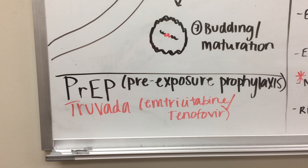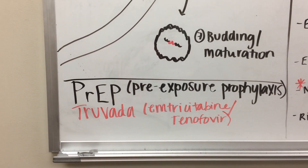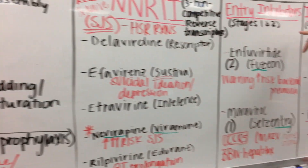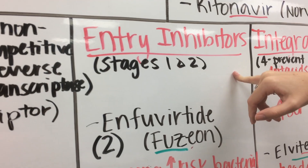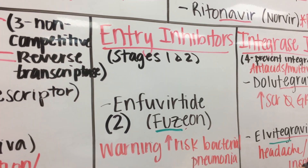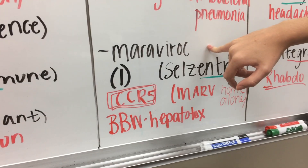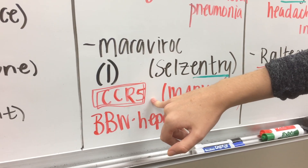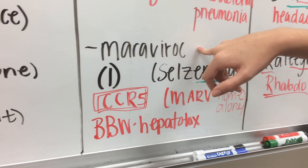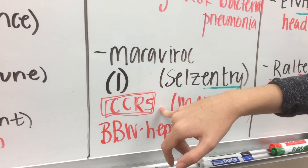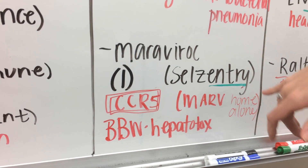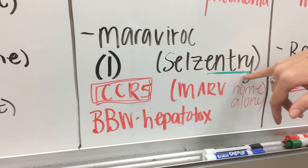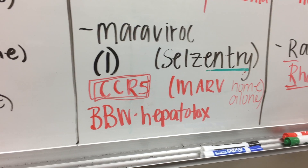We have a lot of different drugs that act at these different components. First, we'll talk about our entry inhibitors, which work at stages one and two. Maraviroc works at stage one, the binding site — specifically the CCR5 binding site. This medication only works if the HIV virus is binding to that specific site. The brand name is Selzentry, so we can remember 'entry' — it's preventing the entry of the virus into the CD4 cell.